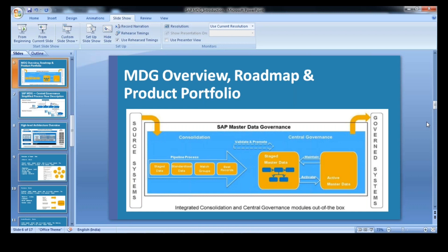So from the source system we get the particular data and that is staged — meaning that is the way the information is. And from there, when you say standardized data, what actually happens there?